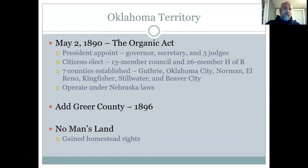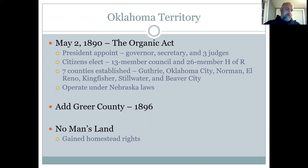In 1896, they added Greer County as a part of Oklahoma Territory between the Red River and its North Fork — close to the border of Texas. That is in the southwest corner of Oklahoma on the map on page 305. No Man's Land, which is the Oklahoma Panhandle, had been somewhat of an island or buffer between Texas and Kansas. It also was part of Oklahoma Territory, and people who lived there gained homestead rights when it was officially made part of Oklahoma Territory in 1890.